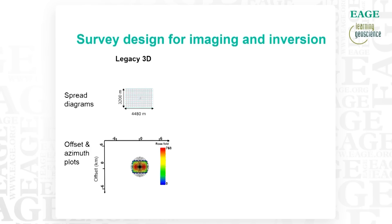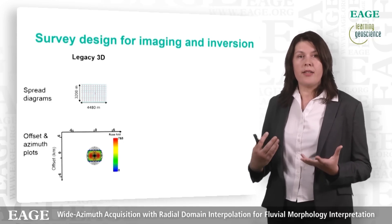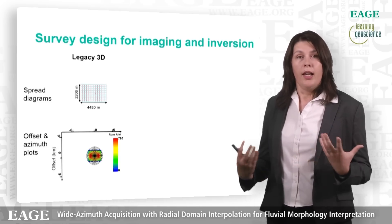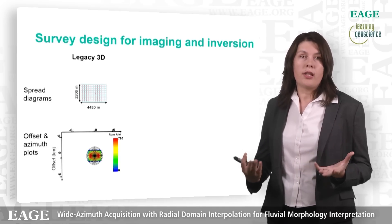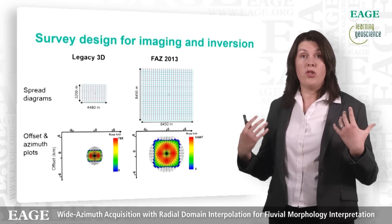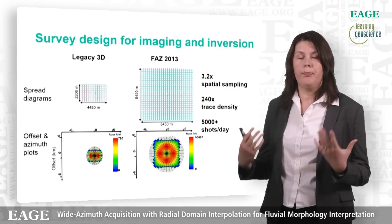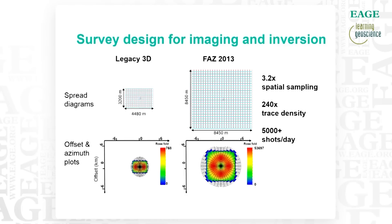Let's compare these new requirements to the old legacy 3D data typically acquired in this area. Here we can see spread diagrams on the top and offset and azimuth plots on the bottom. The legacy survey has limited offsets and is quite narrow azimuth. The new survey design shows a massive increase in patch size, with much longer offsets that are uniform in all directions — a full azimuth survey up to 4.2 kilometers. As a result, we achieve three times better spatial sampling and 240 times the trace density.